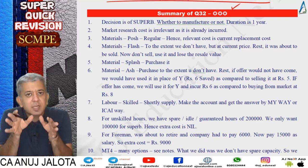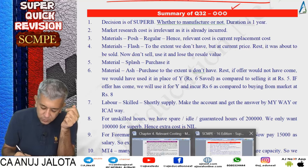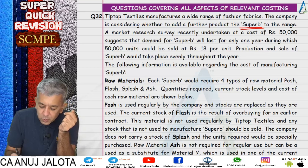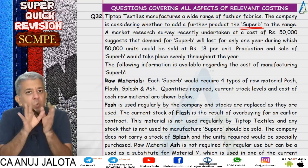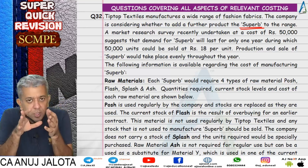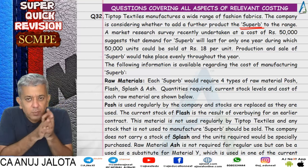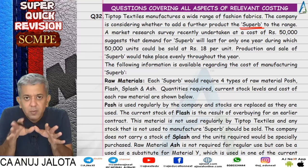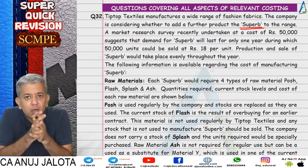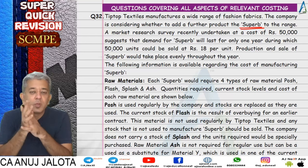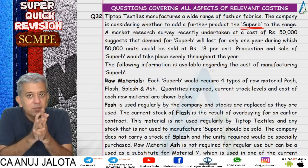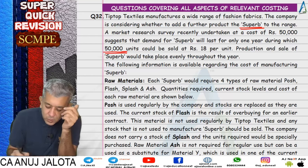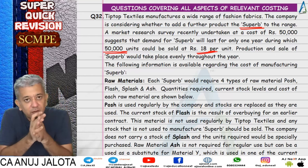We started with questions where almost all the adjustments were present - the first question was a superb question with all adjustments. We have some fashion fabrics business going on normally, and suddenly an offer comes to manufacture 'Superb' - demand lasting one year, buying 50,000 units at the rate of 18. So this became your relevant revenue.